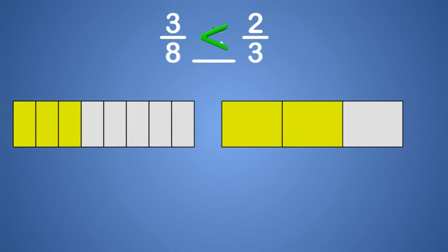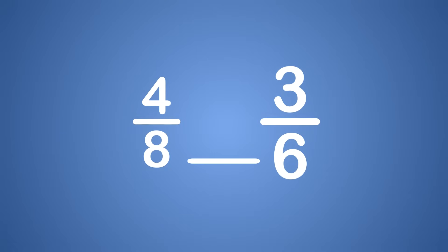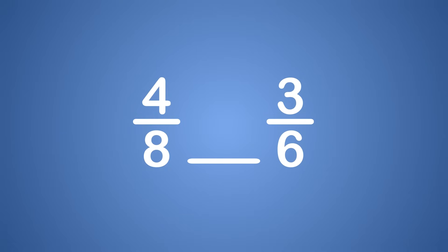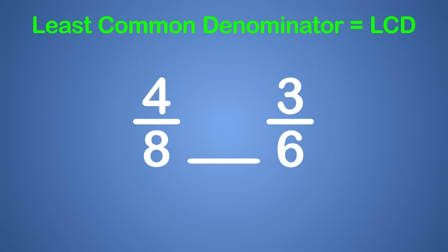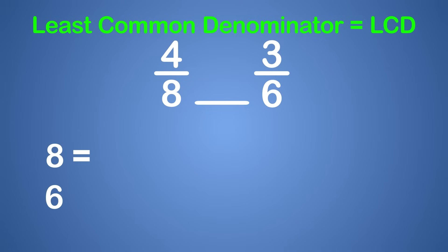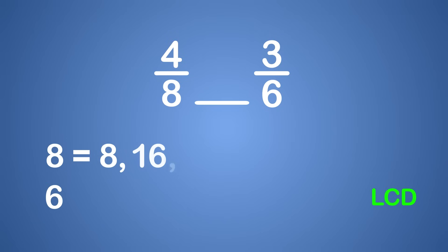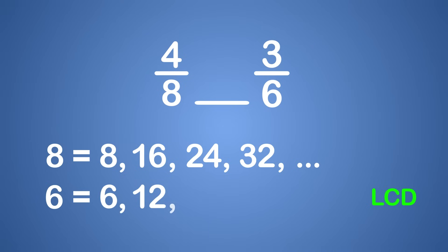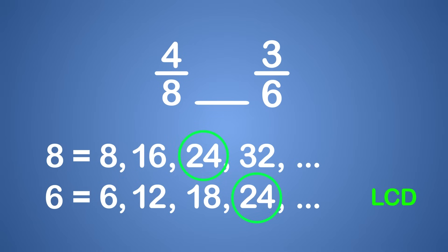Let's try another problem. Which fraction is greater: 4 eighths or 3 sixths? This time let's try a different method — let's write both fractions with a common denominator. First we need to determine the least common denominator, or LCD. The LCD is the lowest possible multiple of the two denominators. Our denominators are 8 and 6. Let's list a few of their multiples. 8 times 1 is 8, 8 times 2 is 16, 8 times 3 is 24, 8 times 4 is 32, and so on. Now 6: 6 times 1 is 6, 6 times 2 is 12, 6 times 3 is 18, 6 times 4 is 24, and so on. Aha! 24 is the lowest common multiple of 8 and 6. This will be the new denominator in our fractions.